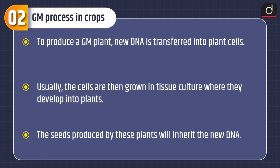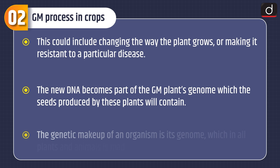Now let's discuss about the GM process in crops. To produce a GM plant, new DNA is transferred into plant cells. Usually, the cells are then grown in tissue culture where they develop into plants. The seeds produced by these plants will inherit the new DNA, which could include changing the way the plant grows or making it resistant to a particular disease.